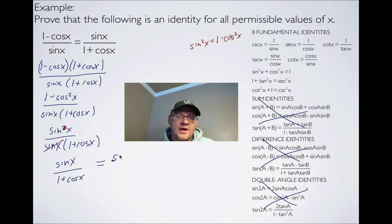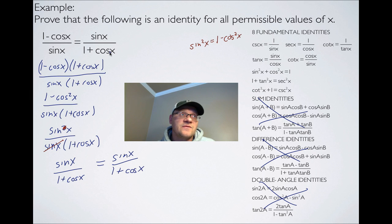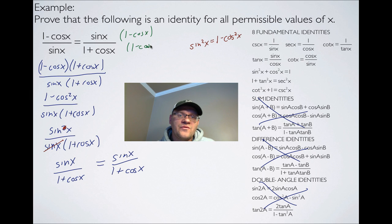I am left with sine x over 1 plus cosine x, which is exactly what I was supposed to prove. The key is to make substitutions and try different approaches. When you see conjugates, multiply the top and bottom by the conjugate. There's not just one solution — you could do any number of steps and still get the left-hand side equaling the right-hand side.